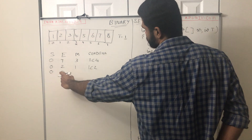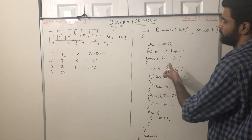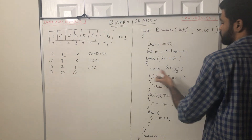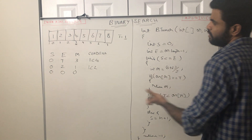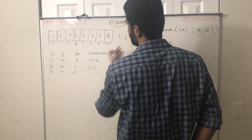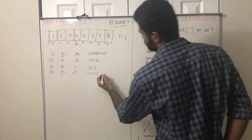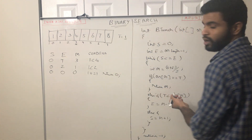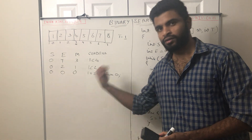Again we enter the while loop: 0 is less than or equal to 0, so we come in. We get the middle element: (0 + 0) / 2 = 0. We check whether the element at index 0 equals the target. The element at index 0 is 1, and 1 equals 1, so it matches. We return the index 0. That is how we return the correct index when the target is found in the array.